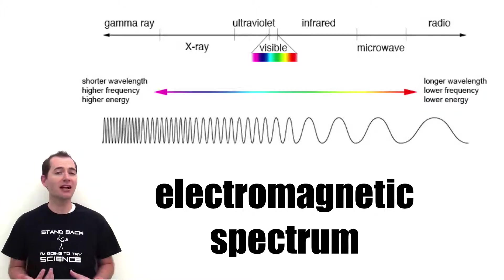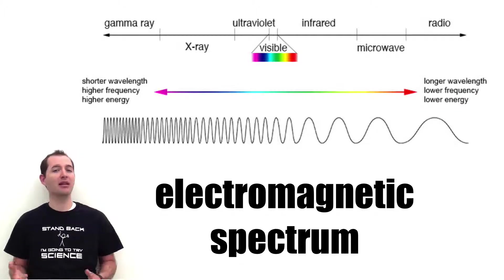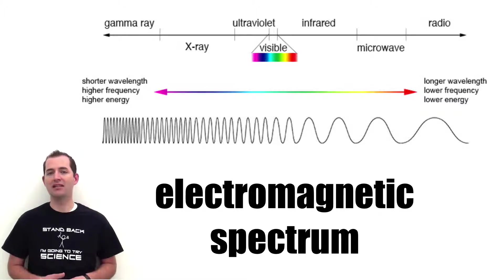The electromagnetic spectrum is subdivided into categories of different types of waves, and that's primarily based on how those waves interact with different types of matter.